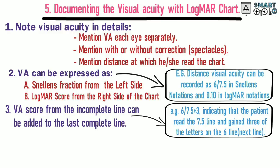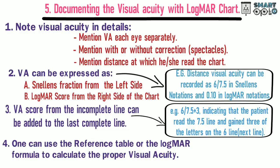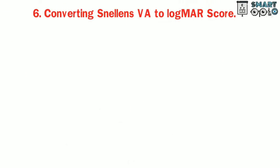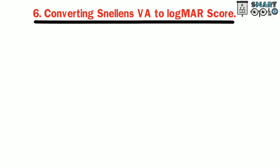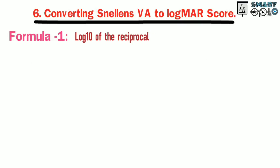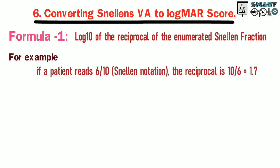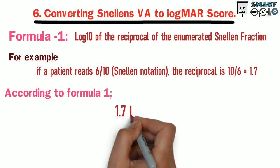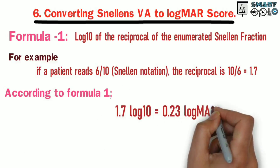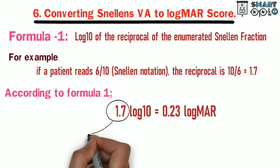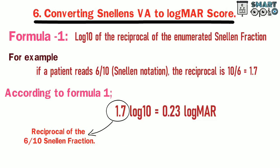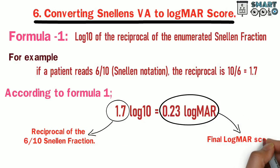Visual acuity score from an incomplete line can be added to the last complete line. For example, 6/7.5 plus 3, indicating that the patient read the 7.5 line and gained three letters on the 6th line. One can use a reference table or the LogMAR formula to calculate the proper visual acuity. Converting Snellen visual acuity to LogMAR score — Formula 1: Log10 of the reciprocal of the Snellen fraction. For example, if the patient reads 6/10, the reciprocal is 10/6, which equals 1.7, and Log10 of 1.7 equals 0.23 LogMAR.